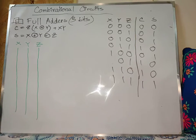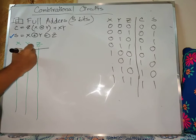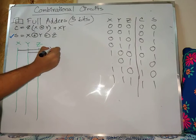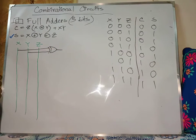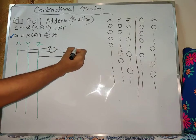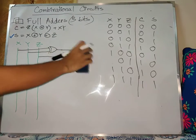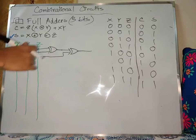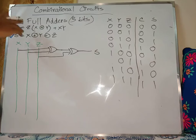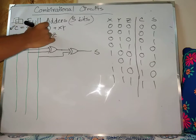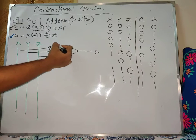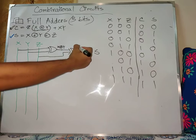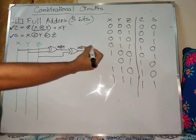First, we have the SR equation to draw the circuit. So x and y XOR gives us one term. Then x and y XOR, and then z XOR is applied. So x XOR y XOR z — we complete this. So the SR equation is x XOR y XOR z.